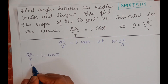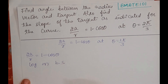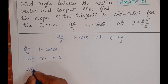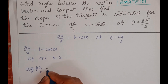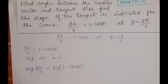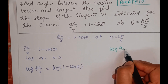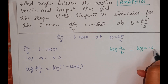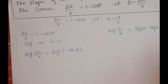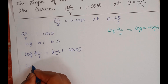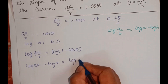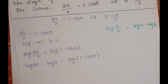We will take log on both sides. So taking log on both sides: log(2a/r) = log(1 - cosθ). You know log(a/b) is nothing but log a minus log b, so I will write this as log(2a) - log(r) = log(1 - cosθ).